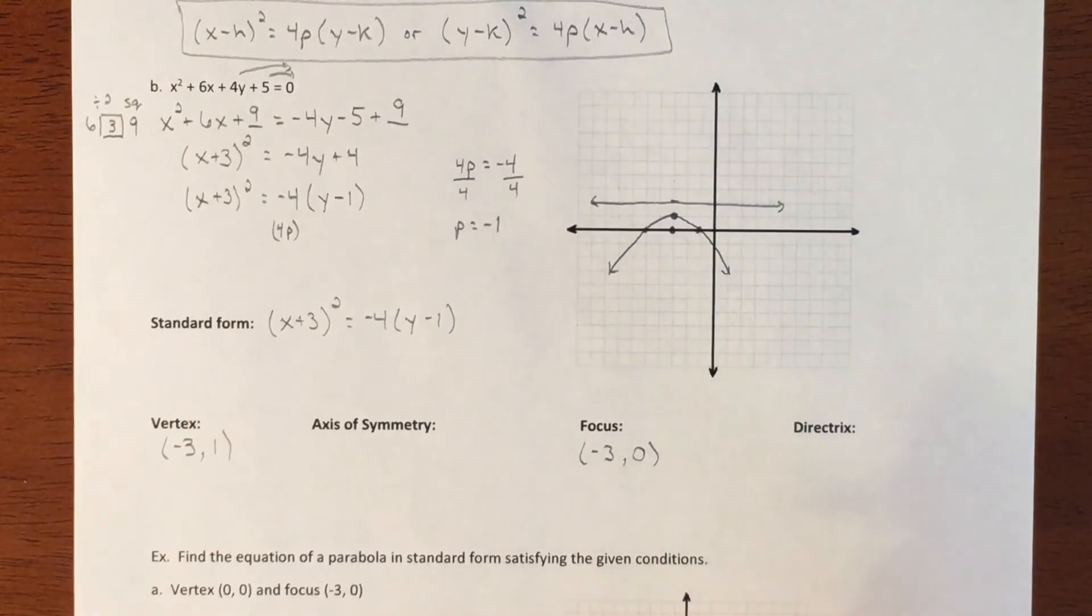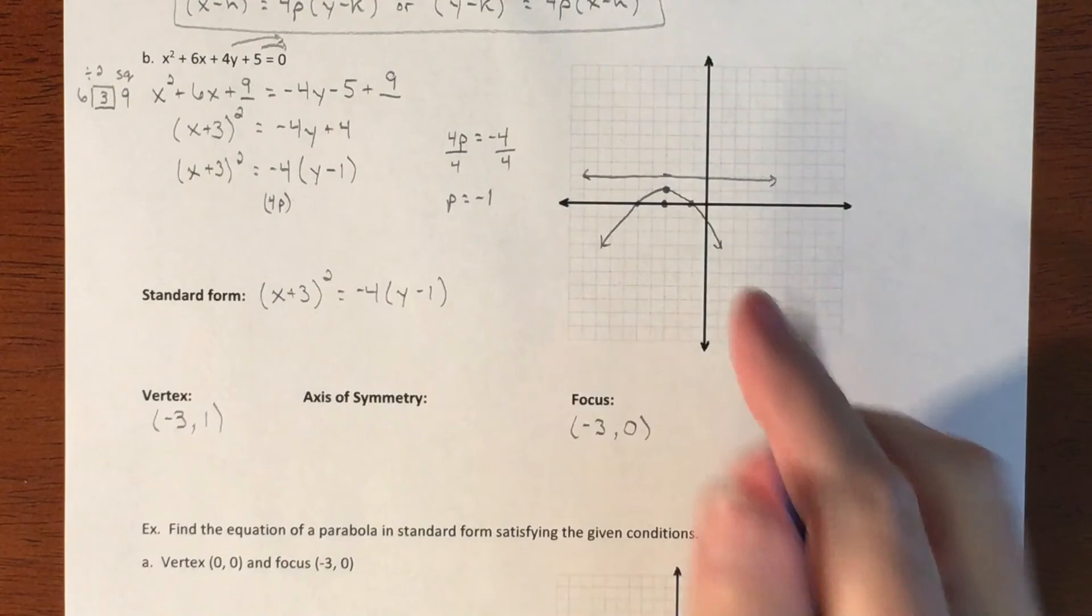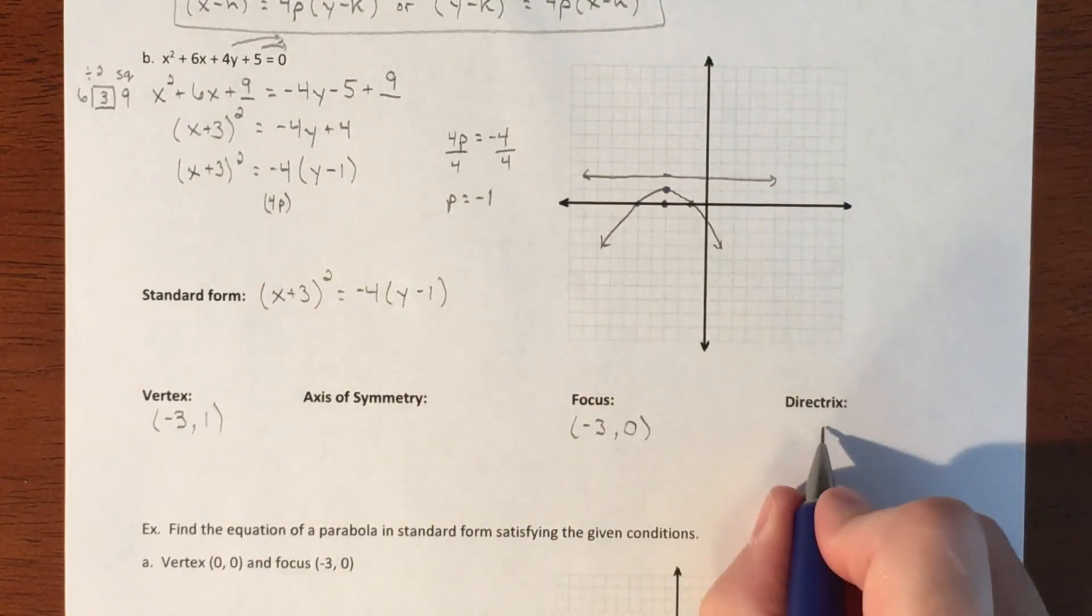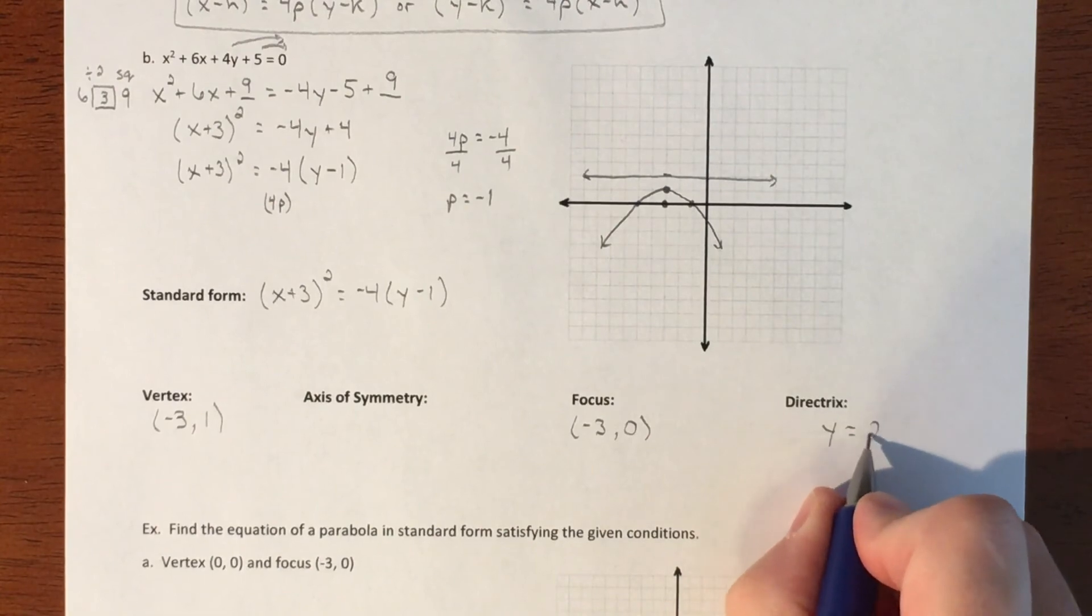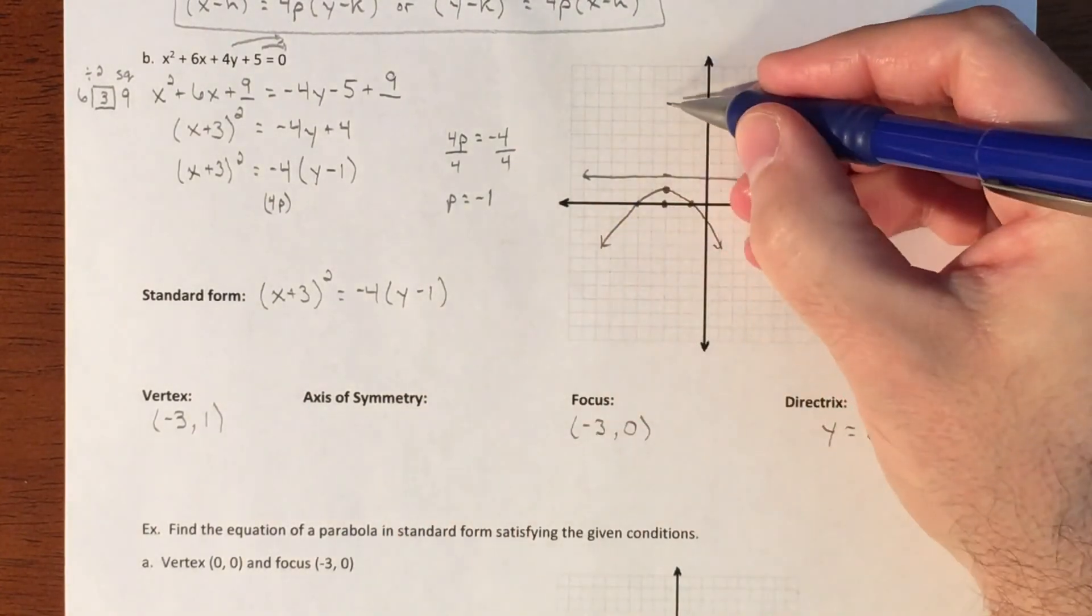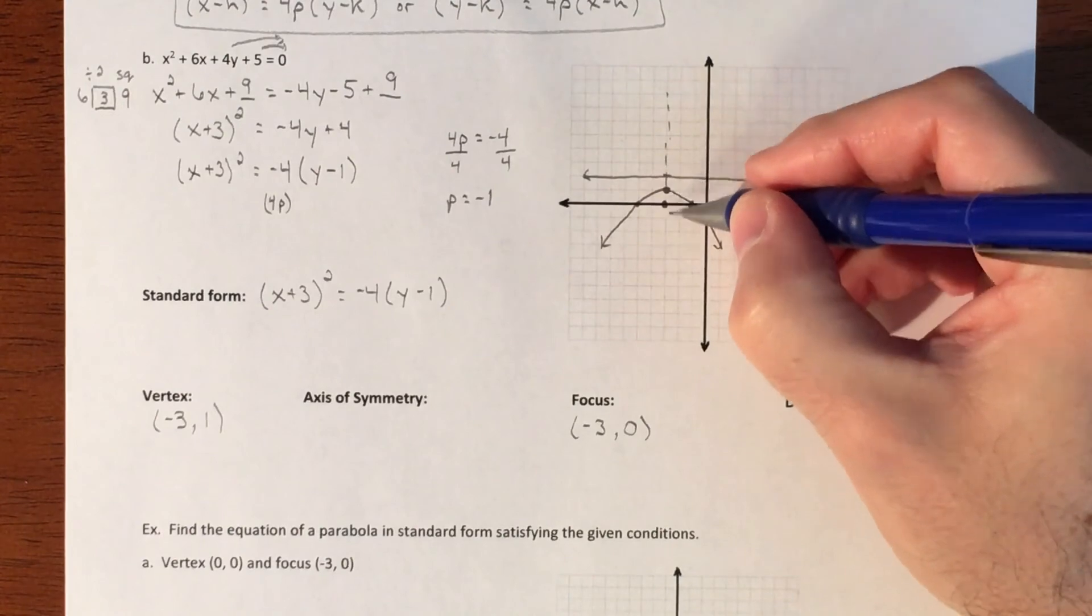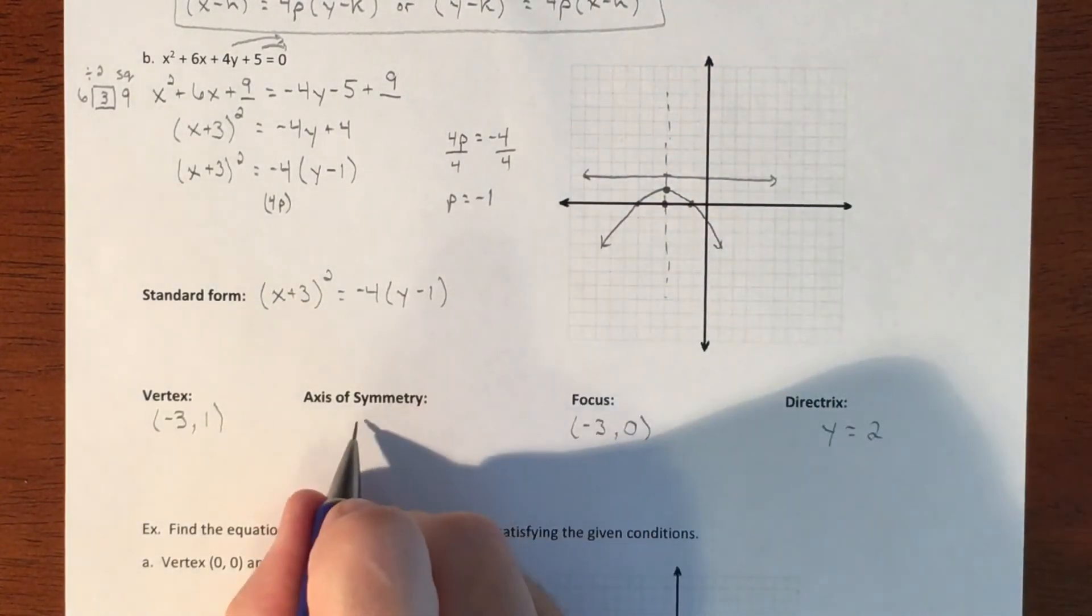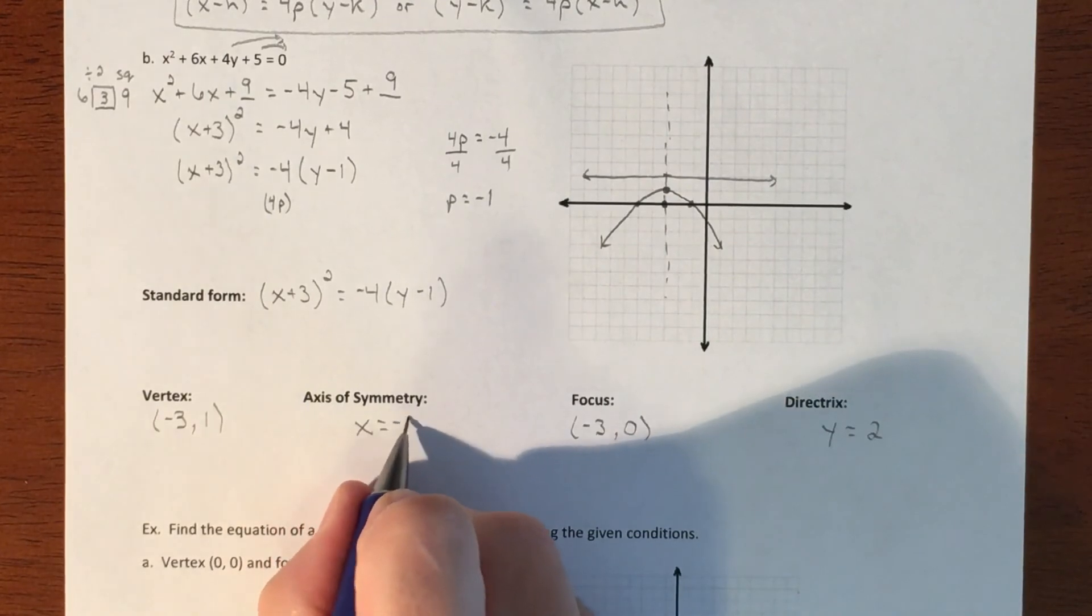All right. So rough sketch. And then I can start to answer the rest of the questions. We have our equation for our directrix as a horizontal line at 2. So then it's just y equals 2. And then our axis of symmetry is cutting right through the graph. So that is going to be at x equals negative 3.